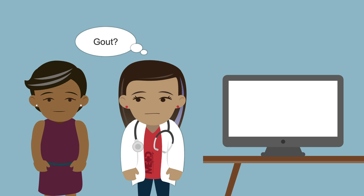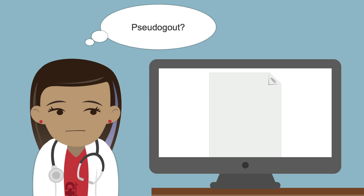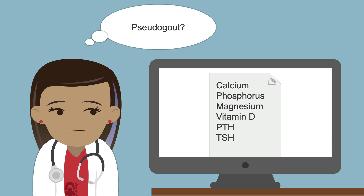For gout, the serum uric acid level is followed over time. For pseudogout, a panel consisting of calcium, phosphorus, magnesium, vitamin D, parathyroid hormone or PTH, thyroid hormone or TSH, and ferritin levels is helpful, because mineral and hormonal abnormalities can trigger pseudogout.